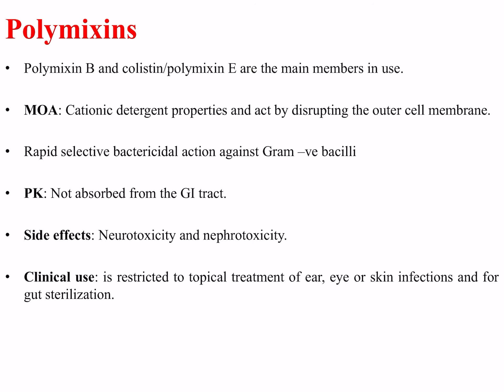Because bacteria also contain cytoplasmic membranes, these too can be a target for antibacterial action by drugs known as polymixins. Polymixin B and a mixture of colistin with polymixin E are the main members in use. These are cationic detergents that act by disrupting the outer cell membrane, with rapid selective bactericidal action against many gram-negative bacilli.